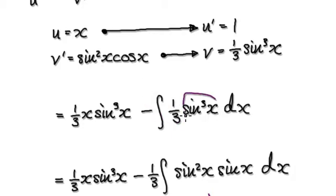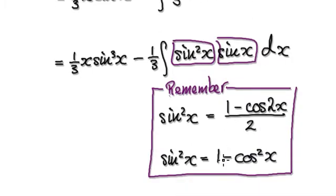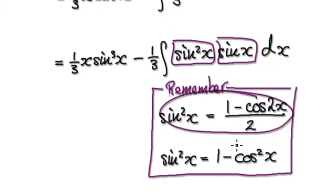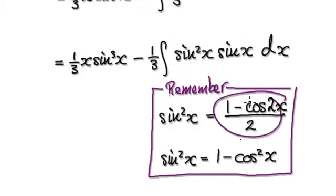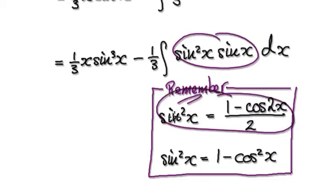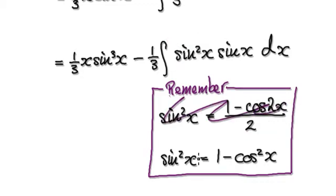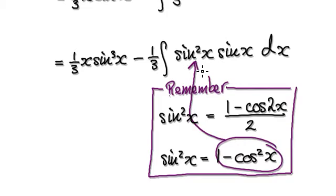Visualize this thing here as sine squared times sine. Whenever you see sine squared or cos squared you should think about the double angle identity first, but in this case we don't use that — it is the Pythagorean identity that we need. So put this into sine squared.